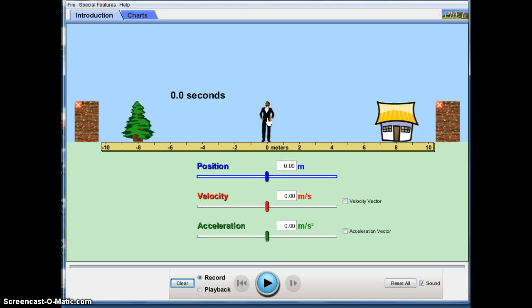To make this man move in the Moving Man simulation, we can either click on the individual and move him, we can reset that, or we could simply change the position in a negative way by moving the position slider.